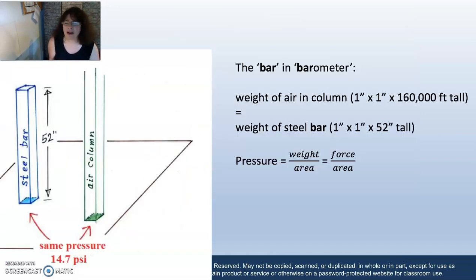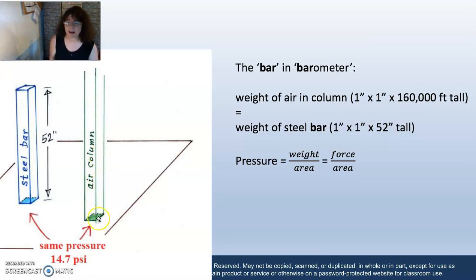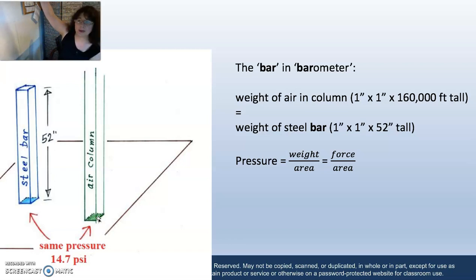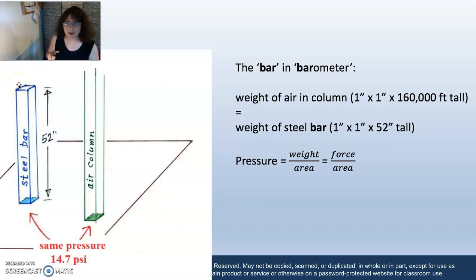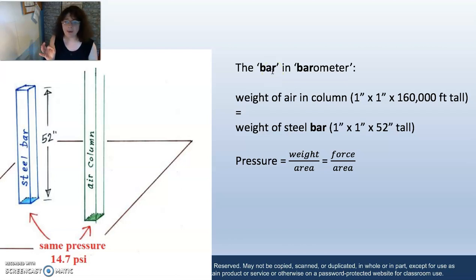Why did we come up with the word bar? This air column of one inch by one inch from sea level all the way up to the top of the atmosphere — about 160,000 feet — at 14.7 pounds is the same as a steel bar that is one inch by one inch and 52 inches tall, about 4 feet 4 inches. That steel bar weighs the same 14.7 pounds. Because it's a bar, they called everything a barometer and talk about millibars. That's how you get the word bar in barometer.